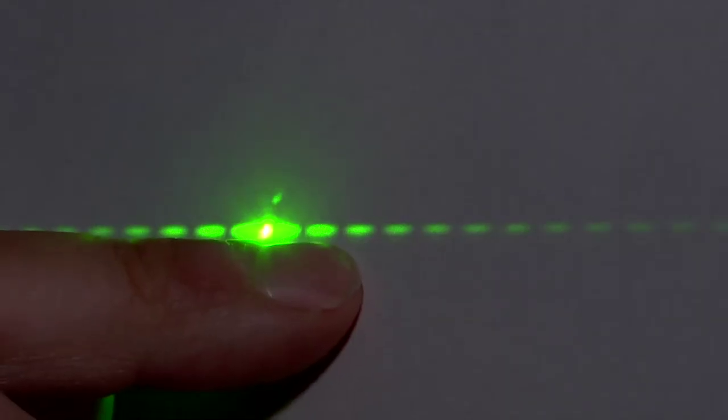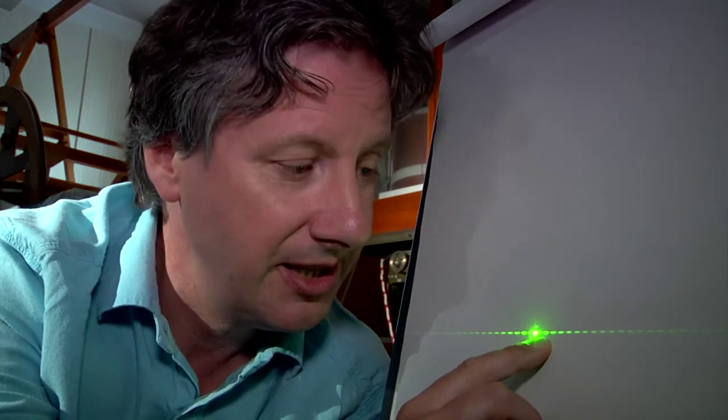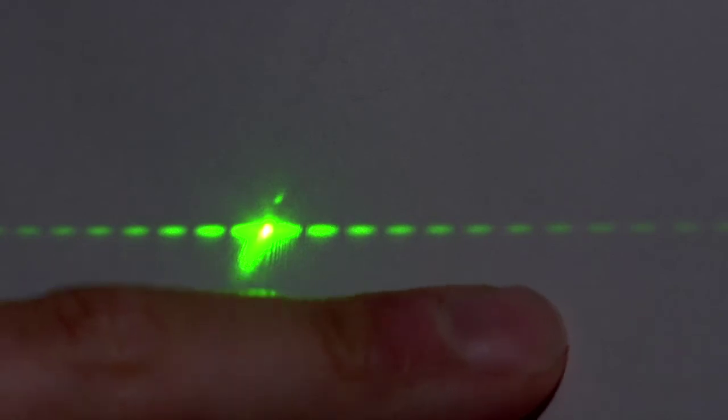If we move a little bit further out again we get constructive interference between the light waves which have traveled each way around the wire and this pattern repeats as we go further out.